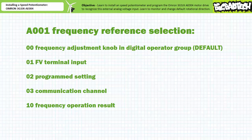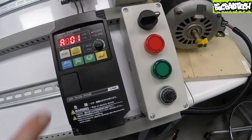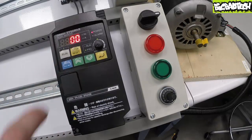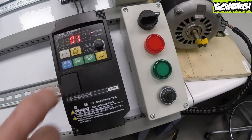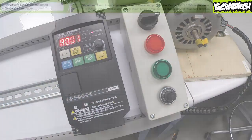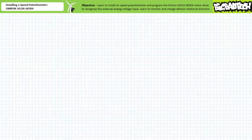Let's navigate to parameter A001, frequency reference selection. Select mode, increment from the default 00 selection to 01 FV terminal input, then select enter to save it. This motor drive has now been programmed to recognize and respond to the external remote analog voltage input.